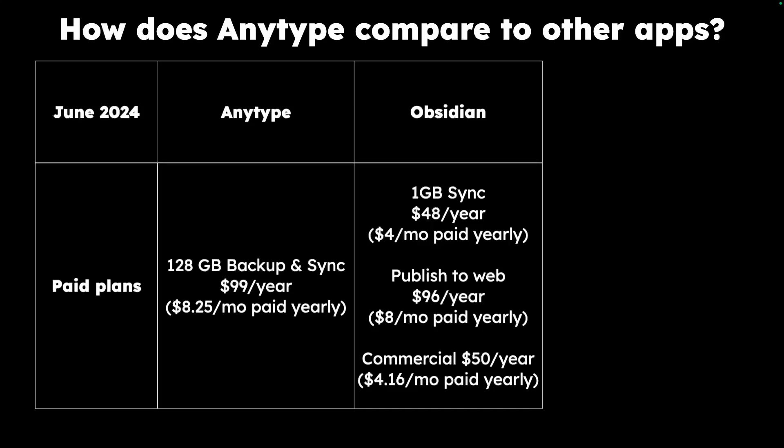However, Obsidian does have other options where you can sync using iCloud, Dropbox, or Google Drive, and I have seen people do that instead of paying for the one gigabyte sync. Obsidian also charges for publish to web at $96 a year, and they have a commercial license fee of $50 a year. At this time AnyType does not require a commercial fee, so whether you use it for personal or commercial use it's the same price — $99 per year.